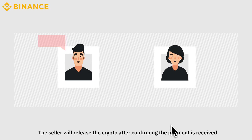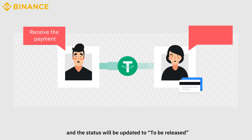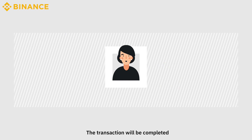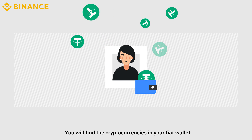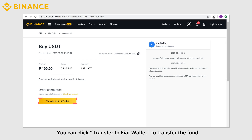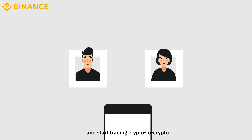The seller will release the crypto after confirming the payment is received, and then the status will be updated to To Be Released. The transaction will be completed. You will find the cryptocurrencies in your fiat wallet. You can click Transfer to Fiat Wallet to transfer the funds and start trading crypto to crypto.